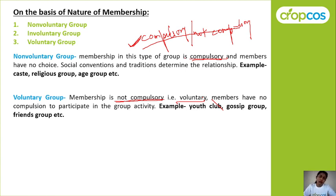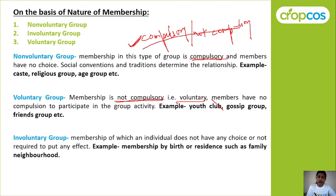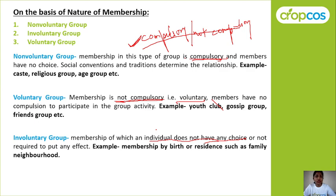Next is the involuntary group. In non-voluntary groups, membership is compulsory; in voluntary groups, it is not compulsory. In an involuntary group, an individual does not have any choice — they are not required to put any effort; they automatically become part of that group. For example, membership by birth — you are automatically part of your family, you don't get a chance to choose. So membership in which an individual has no choice and is automatically part of the group is called an involuntary group.